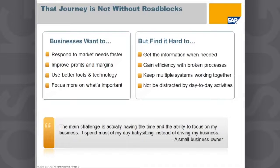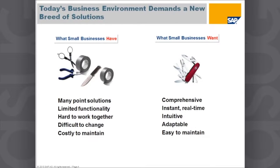So how do we overcome those roadblocks? We believe the answer is to provide businesses with a new kind of solution, because traditional solutions have been many different point solutions with limited functionality that are hard to integrate, difficult to change, and costly to maintain. At SAP, we have more than 30,000 small businesses using SAP Business One, and we get a lot of feedback that goes into our product development.